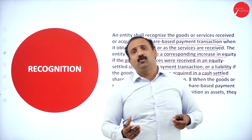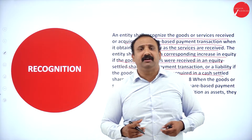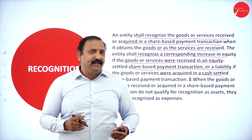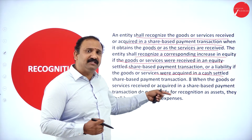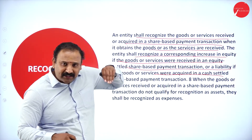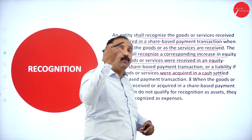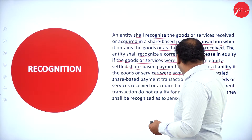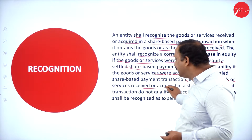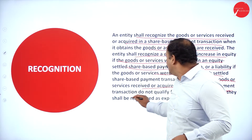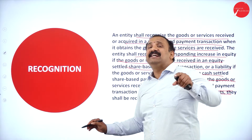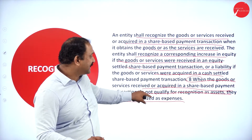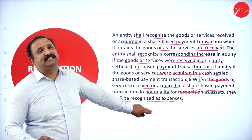For example, Wipro said they are going to do a buyback of shares worth about 16,000 crores, as published in the newspapers. When the goods or services are cash-based, there is a downward trend in equity; when they pay back in terms of equity, there is an increase. Now, when goods and services received in a share-based payment transaction do not qualify for recognition as an asset, they shall be recognized as expenses. So if they are not going to be recognized as assets, they shall automatically be recognized as expenses.